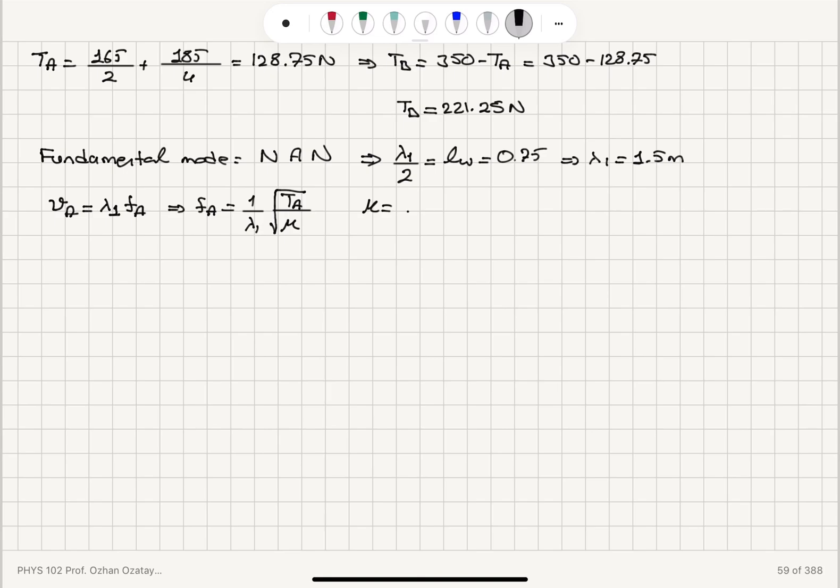These wires were 5.5 grams each. So 5.5 times 10 to minus 3 kilograms divided by 0.75 meters. And the frequency on wire B will be 1 over lambda_1 square root of the tension on wire B divided by the same mu because they are identical wires. Okay.